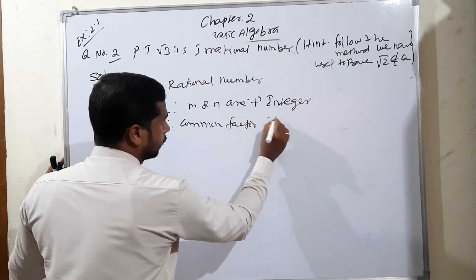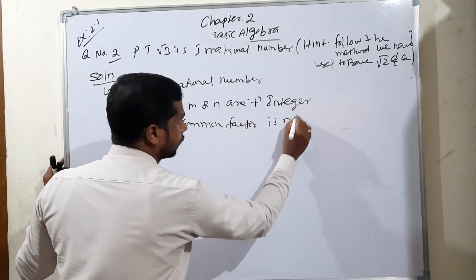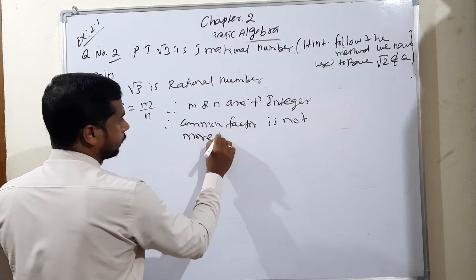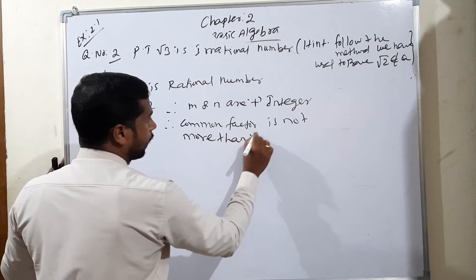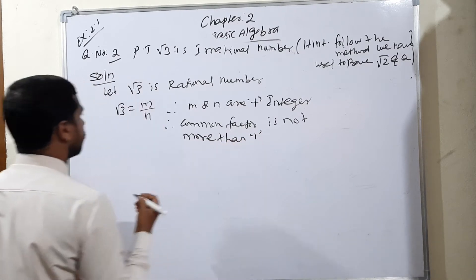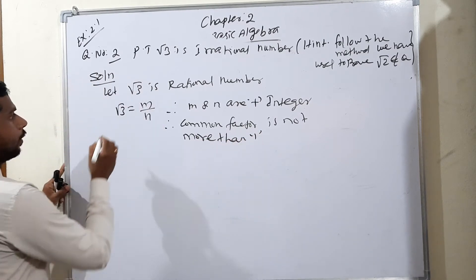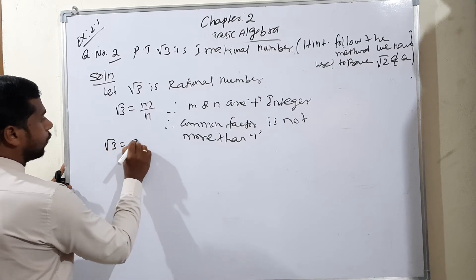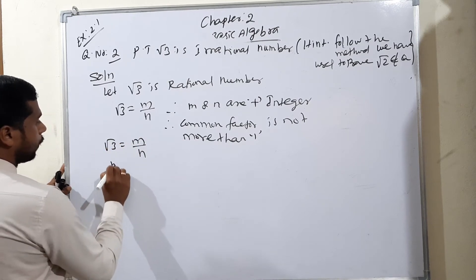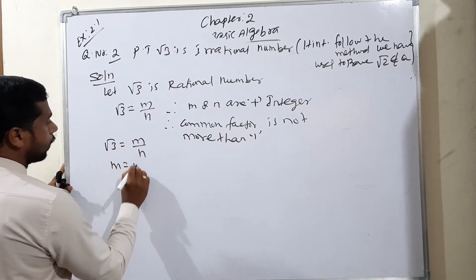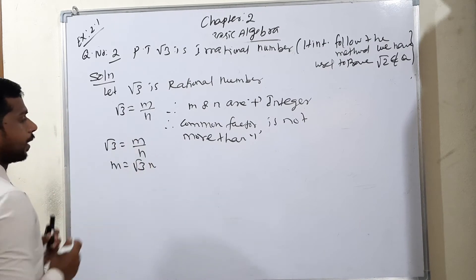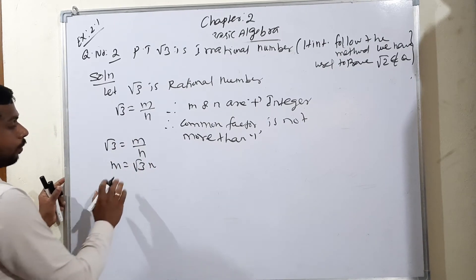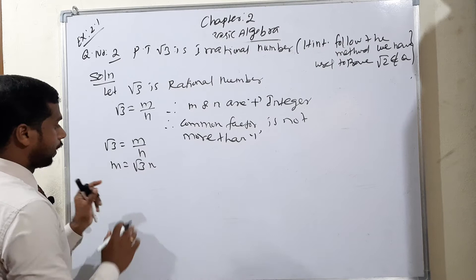Their common factor is not more than 1. So, the common factor is not more than 1. Therefore, root 3 is equal to m by n. Cross multiplying: m is equal to root 3 times n.